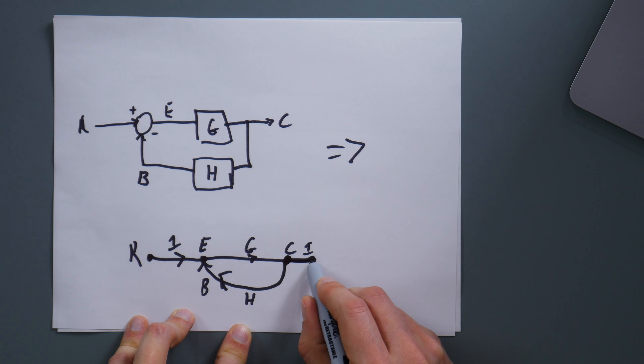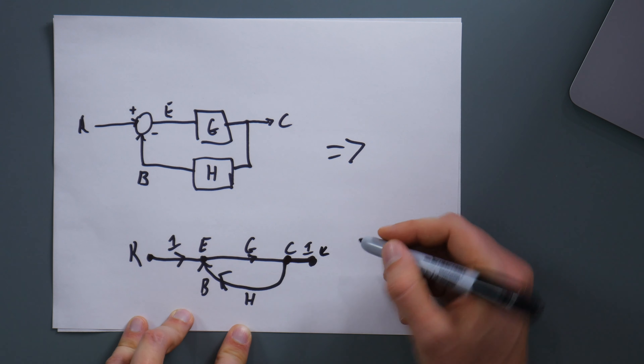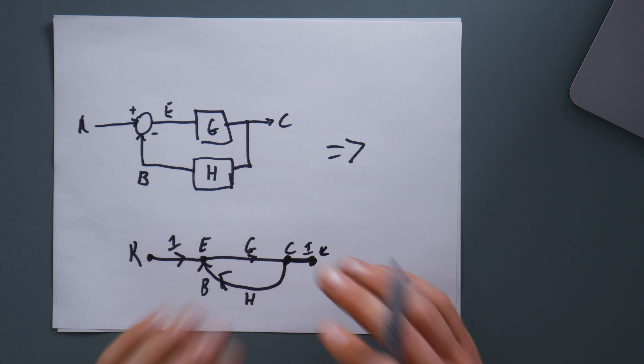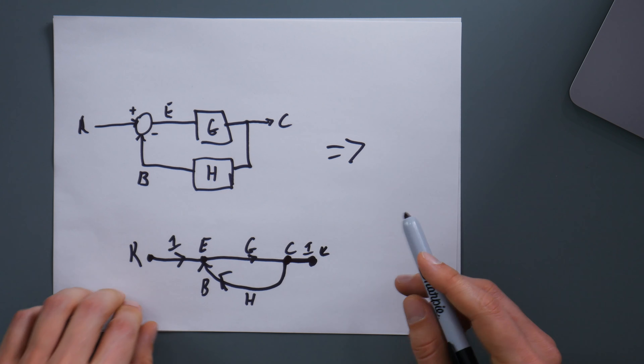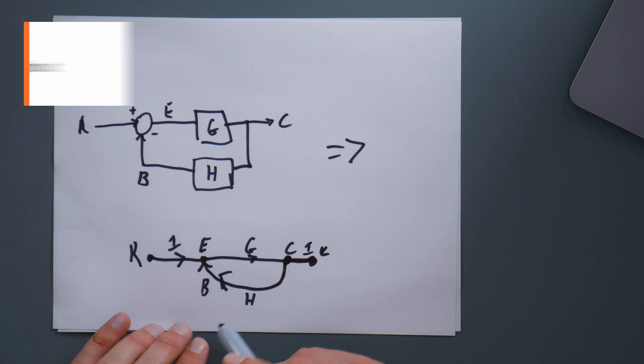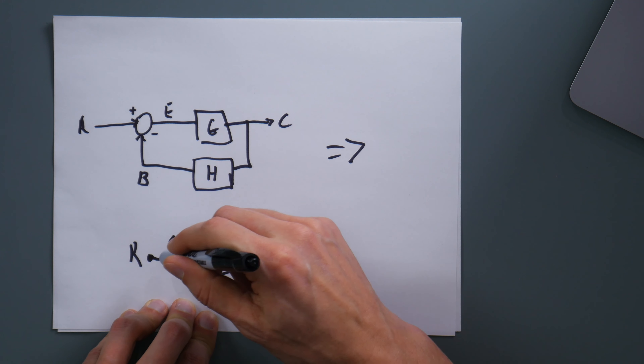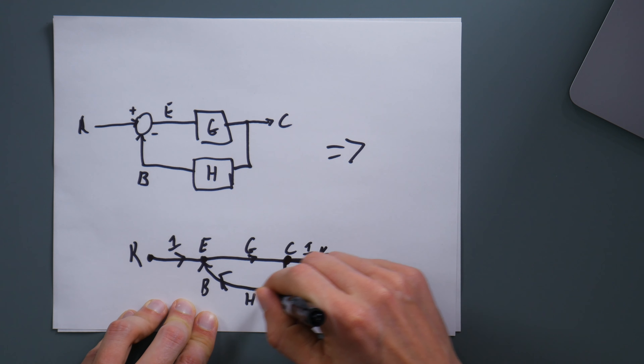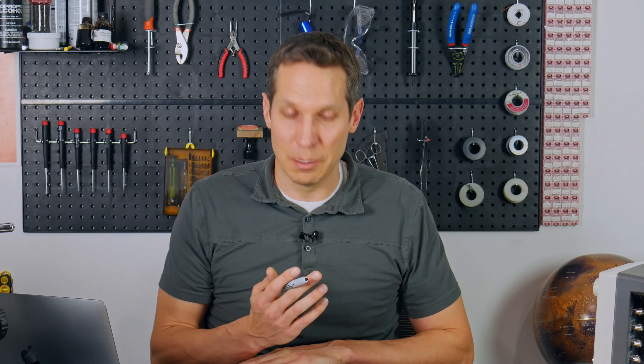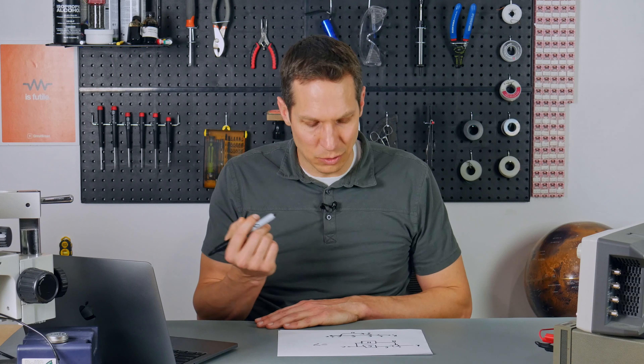There are only three simple rules to follow when going from a block diagram to a signal flow graph. The first rule is that every summing point, takeoff point, and any variable are turned into a node. As you can see here, that summing point is turned into a node right here, and this takeoff point is turned into a node right here. So that is the first rule. Looking at the block diagram, you can see on the left there is a summing point that R goes into before it splits off into G4 and G1.